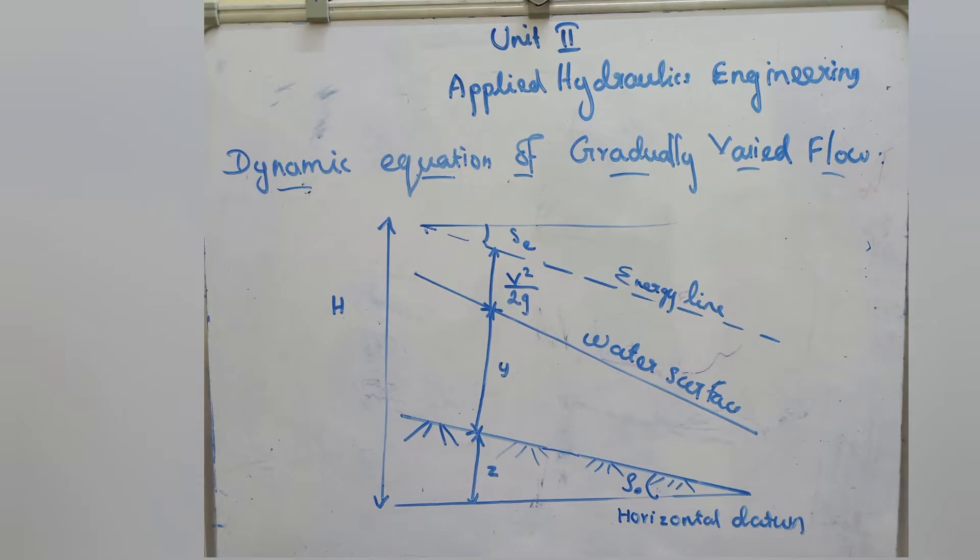S-e is the energy slope — the slope of the energy line at the topmost part. V is the mean velocity of the flow. B is the width of the channel, and Q is the discharge through the channel.